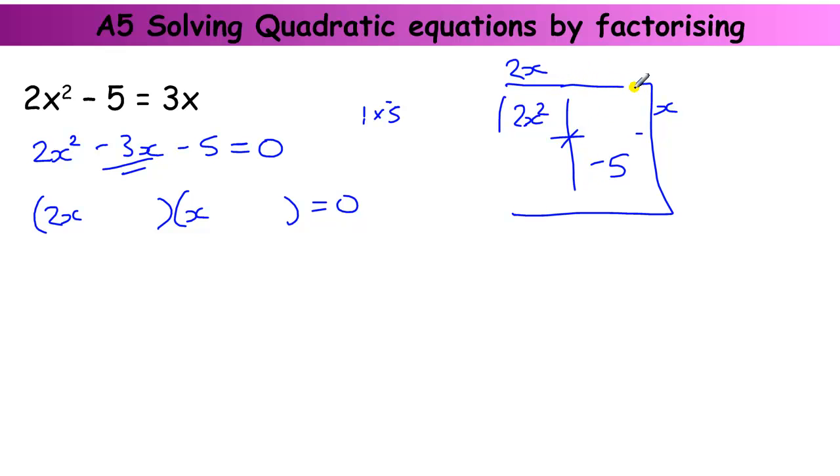What if I put the minus 5 here and a 1 here. So 1 out of 2x is 2x. Minus 5 out of 2x is minus 5x. And minus 5 plus 2 is minus 3. So that gives us our two brackets. 2x minus 5 and x plus 1.